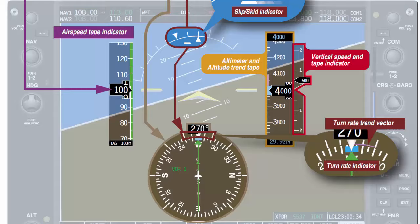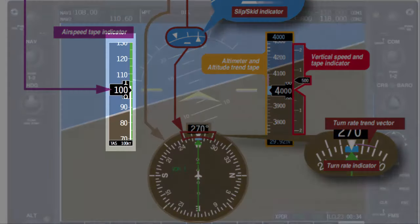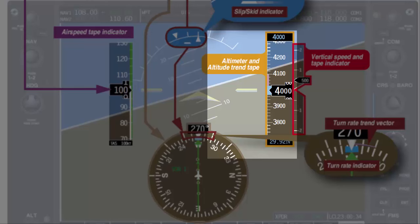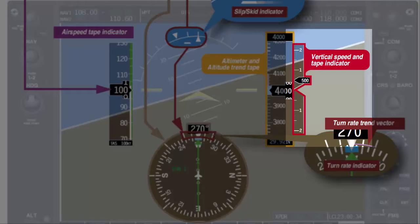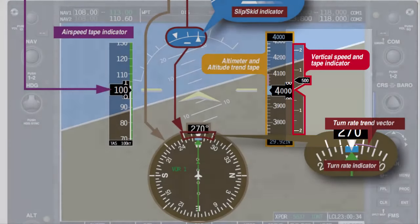For instance, the speed of the aircraft can be referenced on the airspeed indicator. The altitude can be referenced on the altimeter. The aircraft's climb performance can be determined by referencing the VSI.